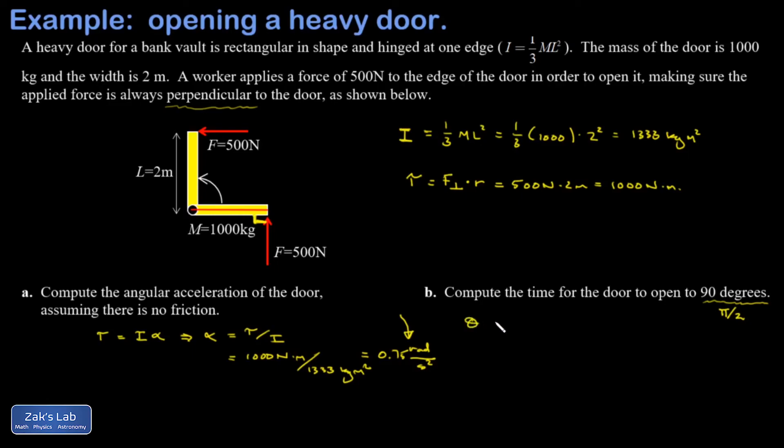I'm going to apply our first angular kinematics formula: theta equals theta naught plus omega naught t plus one-half alpha t squared. I'm going to call the initial angle 0, and the final angle is pi over 2.